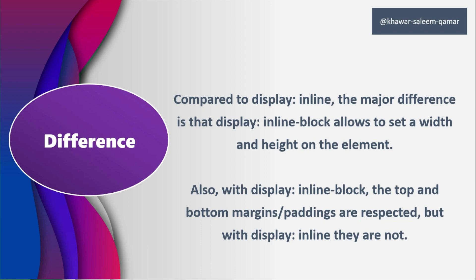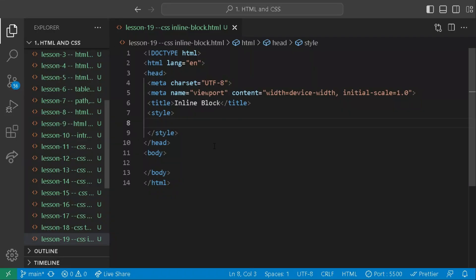We are not just going to see it theoretically, we'll go through it practically. The first difference is that an element having a display of inline doesn't follow the width or height property. Let us go to our IDE — I am in Visual Studio IDE — and see practically what that first difference means: inline display elements don't follow the height or width property.